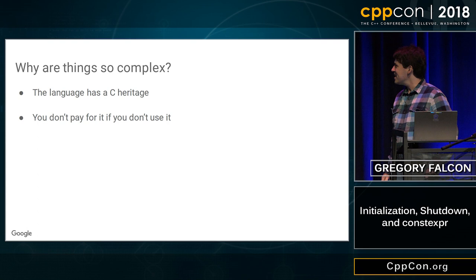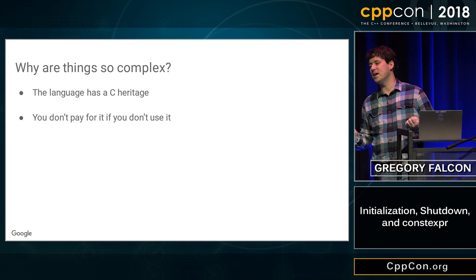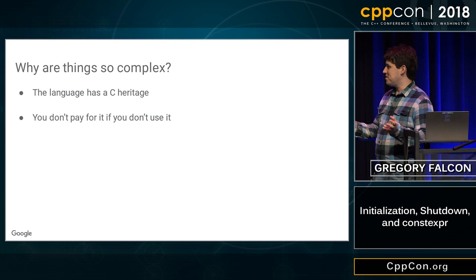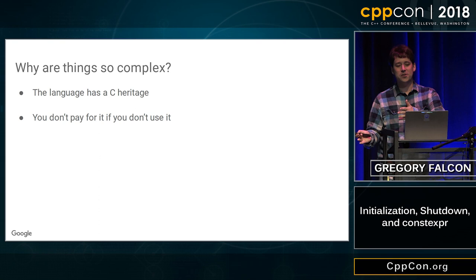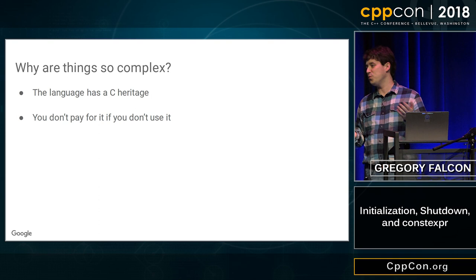The language also has the very strong notion of you don't pay for something that you're not using. Things that should be cheap are cheap. So if you have a global integer, that can just get initialized at compile time and it's super cheap, with nothing to clean up. But if you have a global string, the rules are really complicated. Where you fall into problems is the two cases syntactically look the same — it's very hard to tell the difference between a safe global and an unsafe global, unless you do some work to help.